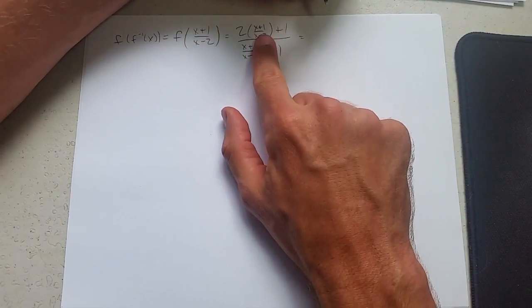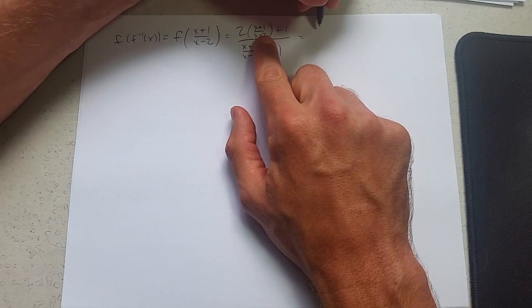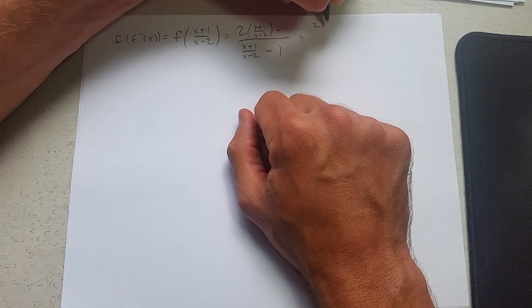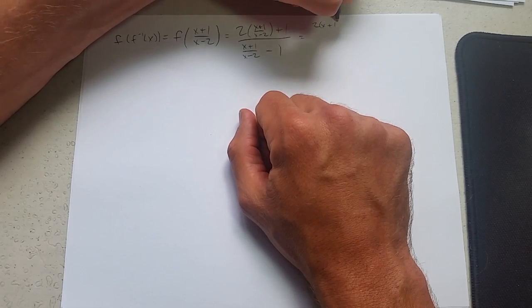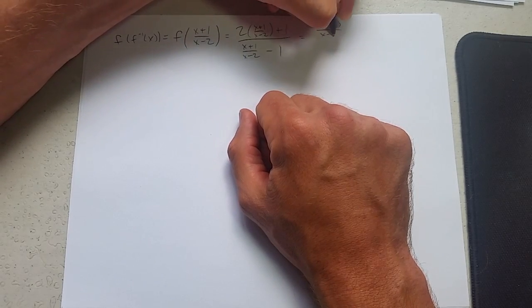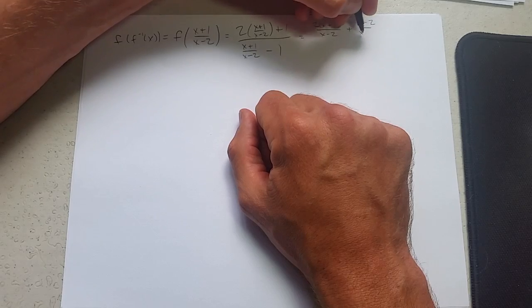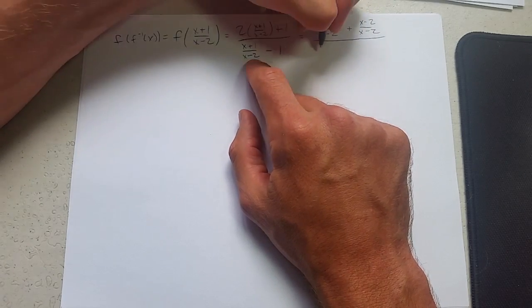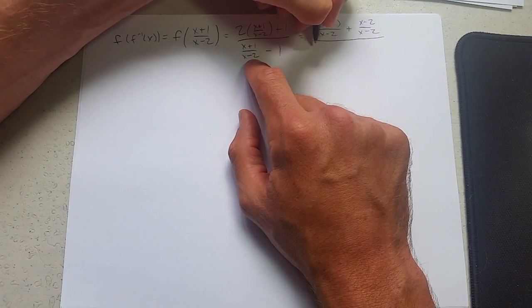So I'm going to go common denominator, add this, and subtract that. x minus 2 is the common denominator on the top. x minus 2 is also the common denominator on the bottom.